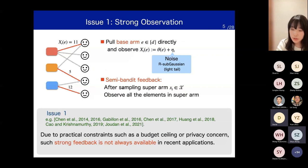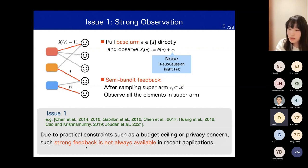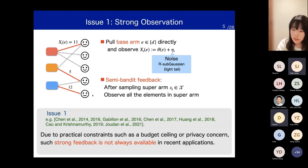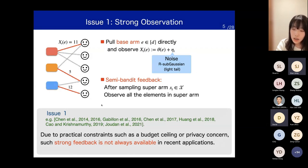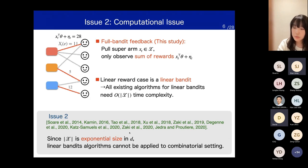There is a large body of work on combinatorial exploration since around 2014. Earlier work assumes that the outcome from each individual edge is always accessible at all rounds, or has studied the semi-bandit feedback, in which after pulling a super arm, random feedback from each component in the super arm is observed. However, due to practical constraints such as budget ceiling or privacy concerns, such strong feedback is not always available in recent applications. To avoid such critical limitations, we need a method based on weak feedback.